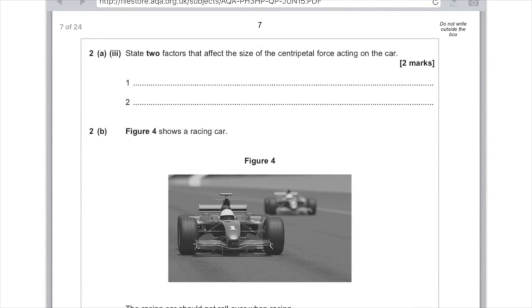2a. State two factors that affect the size of the centripetal force acting on the car. Please just learn these answers. They always come up, these sorts of questions. You can pick here the speed or velocity, the radius of the bend, or you could say like the curvature of the road, that sort of thing. And lastly, the mass of the car. So that's something I would definitely learn. Always learn velocity and the mass.